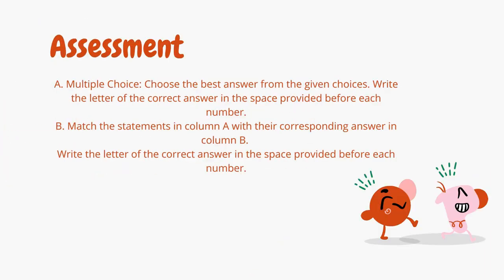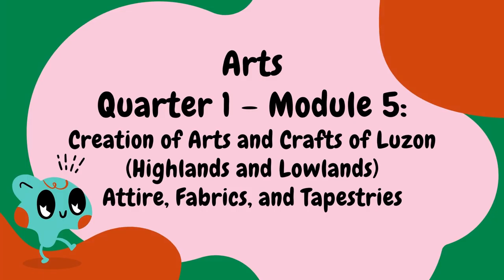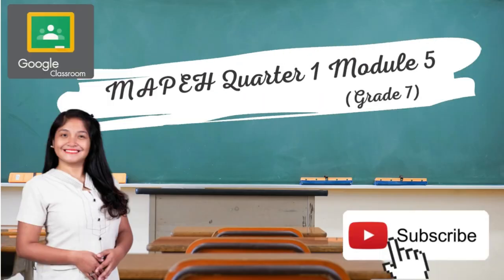For your assessment, the first part is multiple choice — choose the best answer from the given choices and write the letter on the space provided before each number. The second part is matching type — match the statement in Column A with its corresponding answer in Column B. Congratulations! You have reached the end of Arts Quarter 1, Module 5. You are now ready for the next module. Do not forget to click Turn In your file in Google Classroom once you're done answering all the activities. Thank you and happy learning!